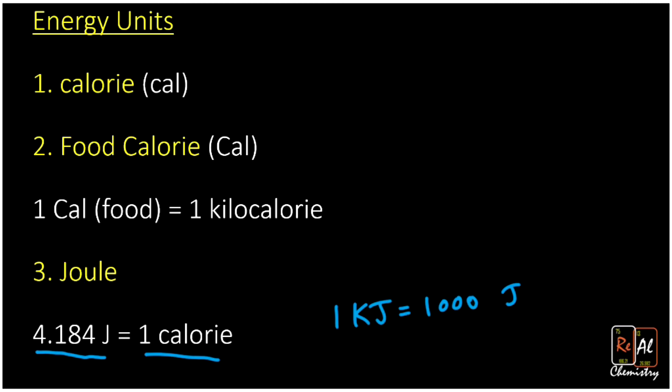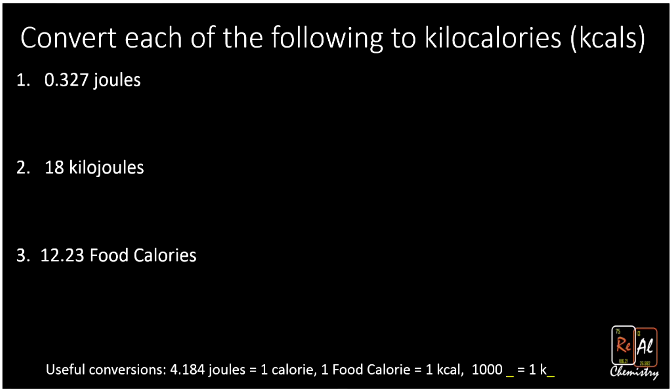Okay, let's actually go through a few conversions. Okay, so we're going to convert each of the following into kilocalories. First of all, we have 0.327 joules. We're going to use the conversion factors we see down here, and we're going to go to kcals. So first we want to divide by joules and multiply by calories. We know that there's 4.184 joules in one calorie.